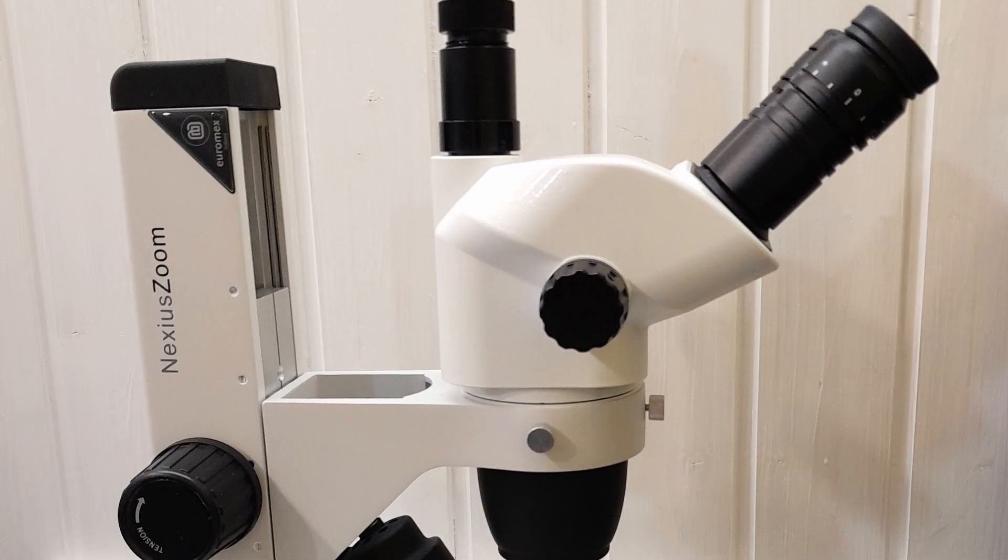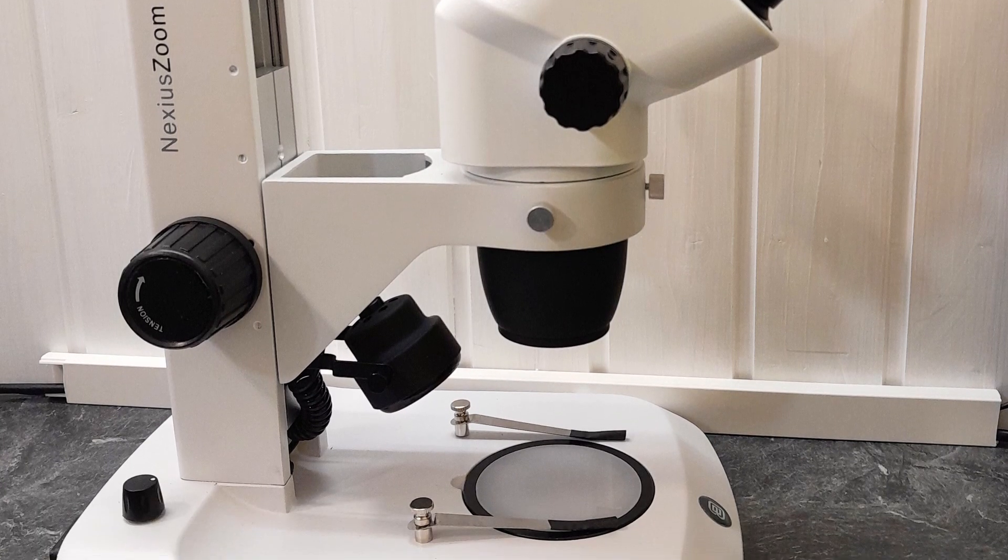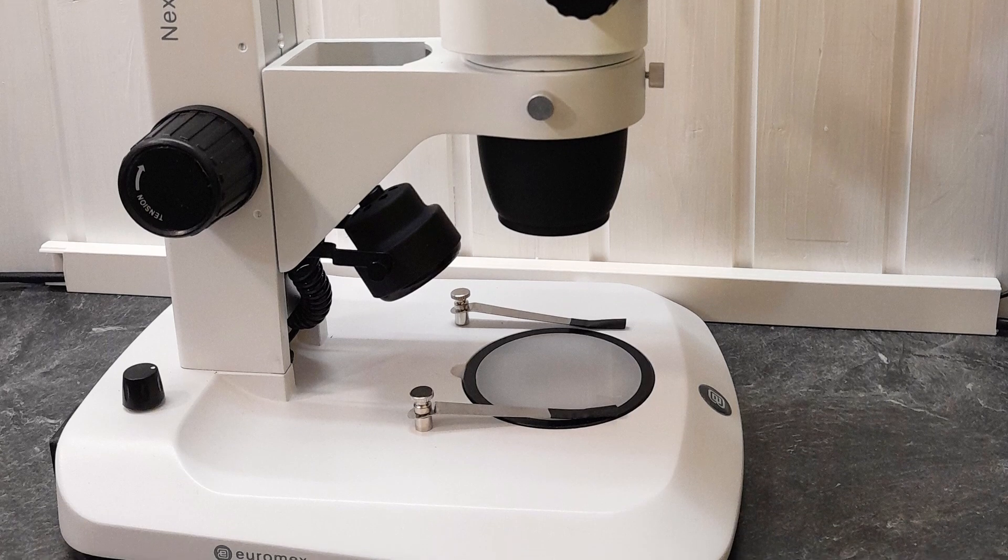Stereomicroscopes allow you to look at larger opaque objects, these are object specimens that are non-transparent. And unlike compound microscopes, stereomicroscopes also produce a three-dimensional stereoscopic view because the two eyes they receive a different image.